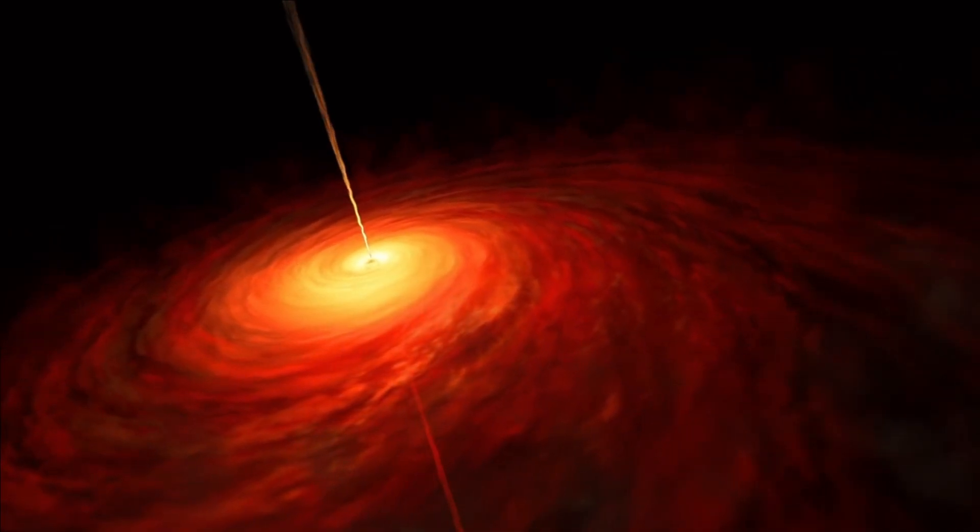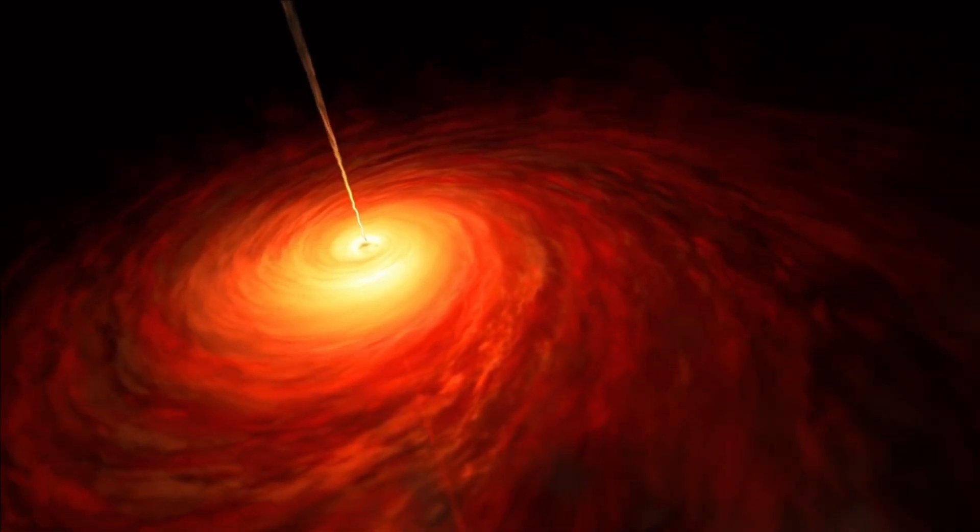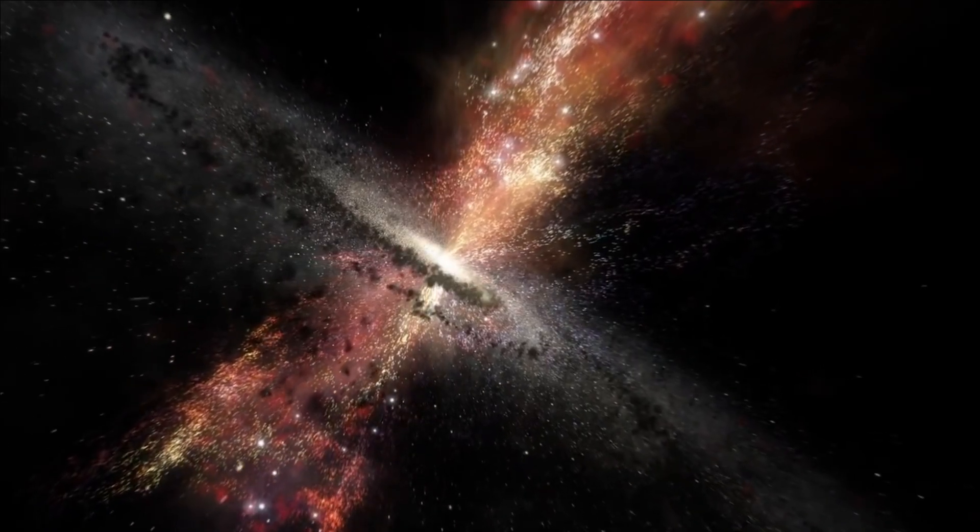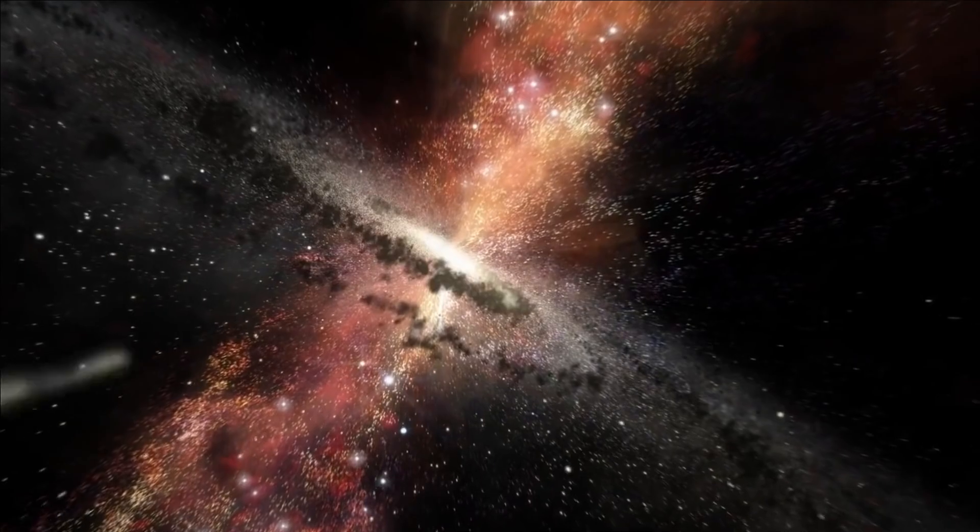Take, for instance, HIP 65426-b, an exoplanet in relatively close proximity, dwarfing Jupiter with a mass equivalent to 6 to 12 Jupiters combined. Not only is it significantly larger, but it's also a youthful celestial body, merely 15 to 20 million years old, in stark contrast to Earth's staggering age of 4.5 billion years.